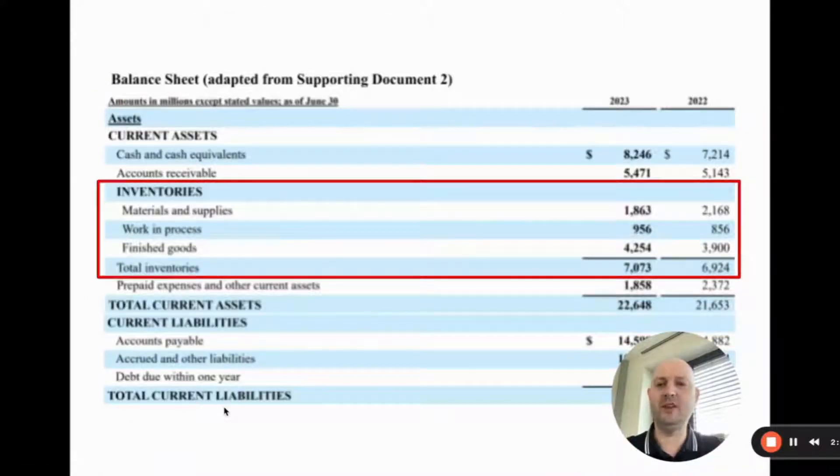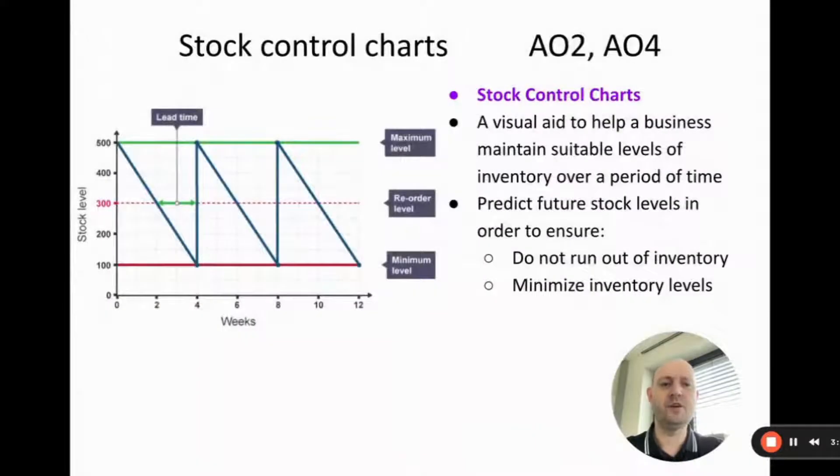This is a balance sheet from a business, publicly available. You can see that they actually break up the inventories into the three things we just talked about. Materials and supplies are raw materials, work-in-progress and finished goods we've just defined. You can see they've got seven billion in inventories with the majority of that being the finished goods and the second most being raw materials. Some balance sheets when you look at annual reports will actually itemize the way their stock or inventory is categorized.